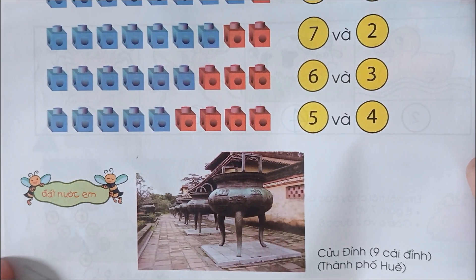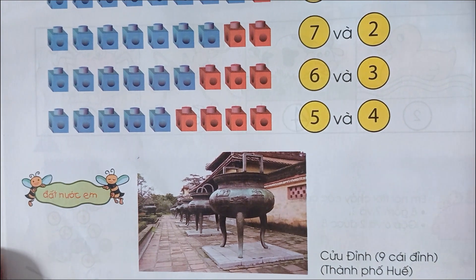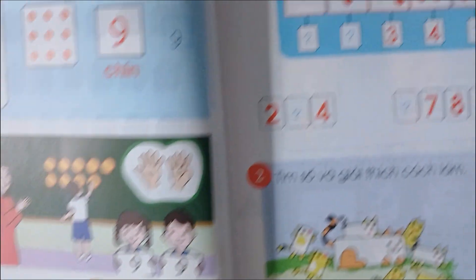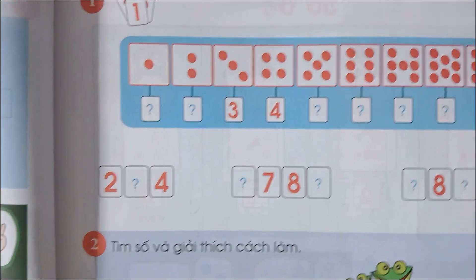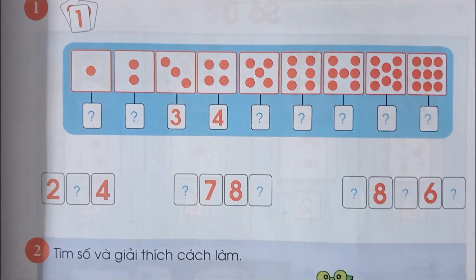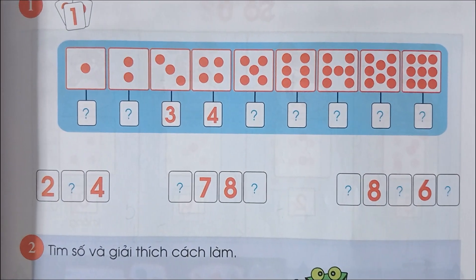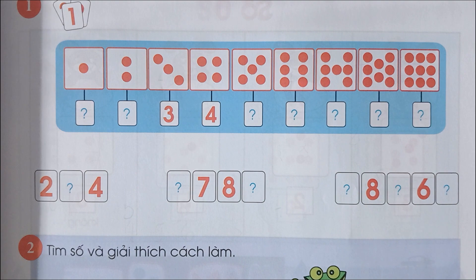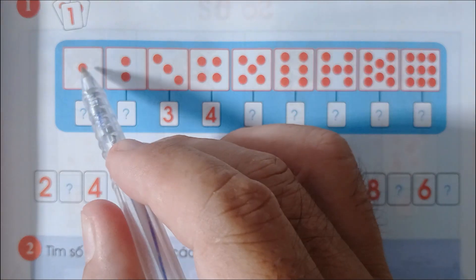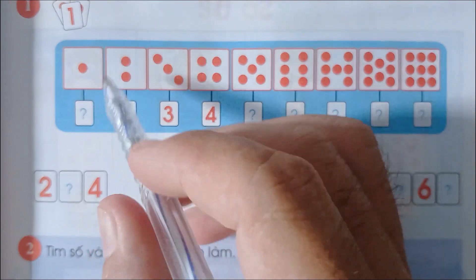Đây là đất nước của em. Cửu Đỉnh, 9 cái đỉnh thành phố ấy. Ta qua bài tập 1. Như vậy đây là 1, mình viết số 1.